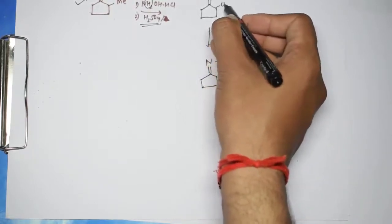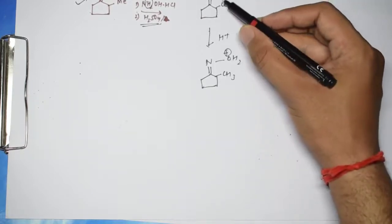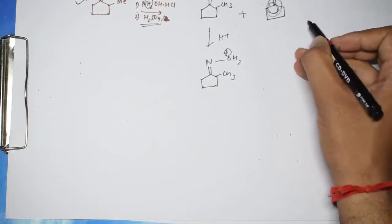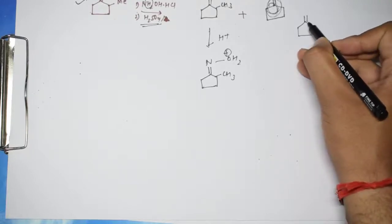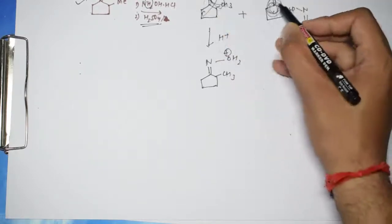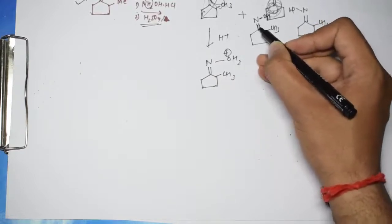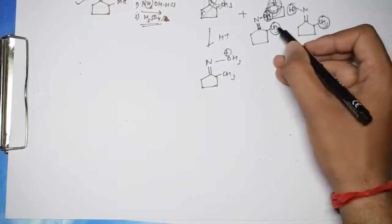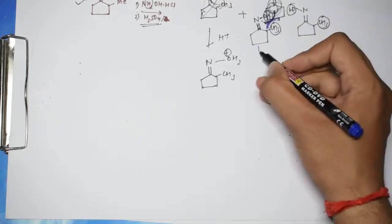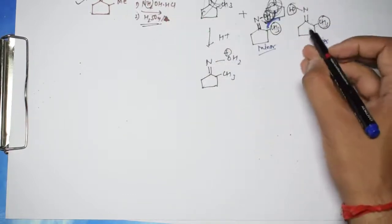Now we have a CH₃ group on the cyclopentanone oxime. There are two possible oxime geometries: the OH can be on one side or the other relative to CH₃. When OH and CH₃ are on the same side, there is steric repulsion — so that isomer is the minor one. The other geometry, where they are anti, is the major oxime isomer, and we proceed with that one.